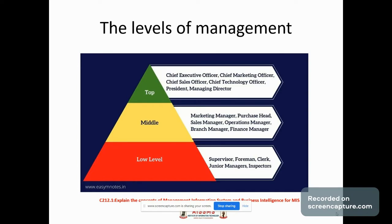The next level is low level of management, also known as supervisory or operative level of management. It consists of supervisors, foremen, section officers, etc. According to R.C. Davis, supervisory management refers to those executives whose work has to be largely with personal oversight; in other words, they are concerned with the direction and controlling function of management.